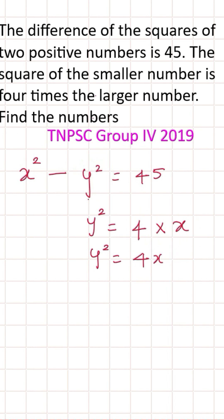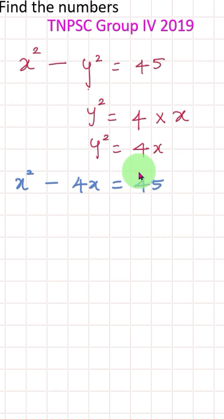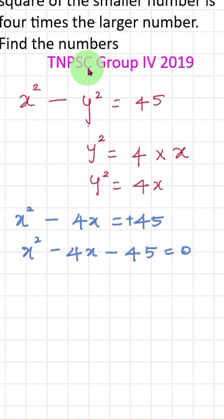So we substitute. X square minus 4x equals 45. We arrange this. X square minus 4x plus 45, equal into 45 becomes minus 45 equal to 0. That is the question, find the numbers.